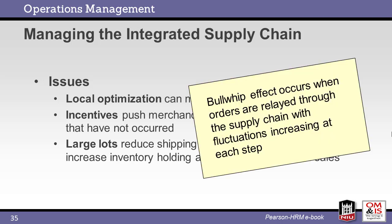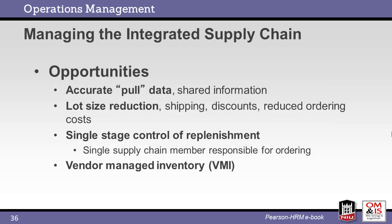One outcome of local optimization is the bullwhip effect. This occurs when each company along the supply chain adds its own buffer, which is passed along to the company upstream. The result is that a minor variation near the customer turns into large-scale variation for the suppliers at the start of the chain. To optimize the supply chain, we need accurate data that is openly shared to reduce uncertainty. Lot sizes are minimized with a single point of control for ordering, and this requires a trusting relationship among the members of the supply chain.